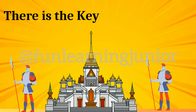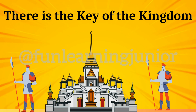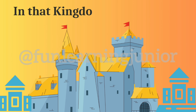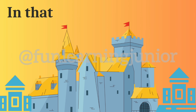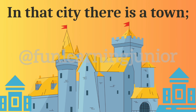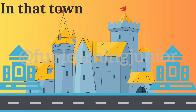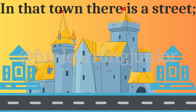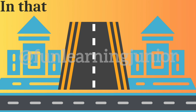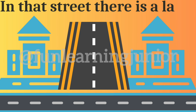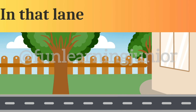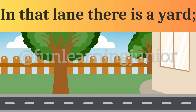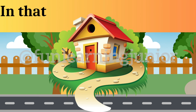There is the Key of the Kingdom. In that kingdom, there is a city. In that city, there is a town. In that town, there is a street. In that street, there is a lane.